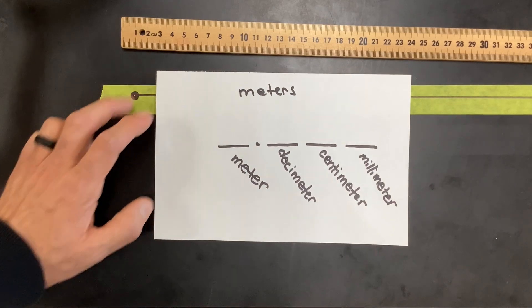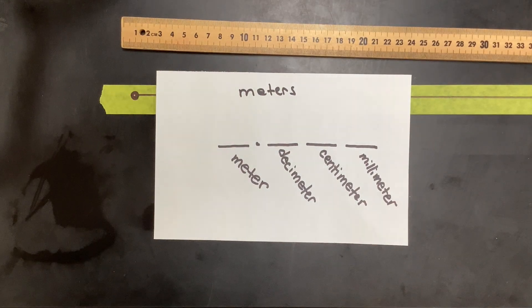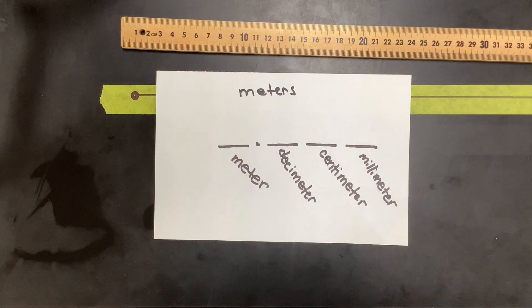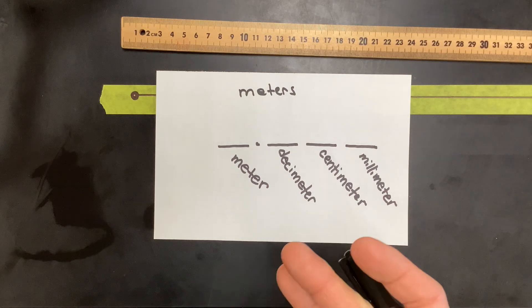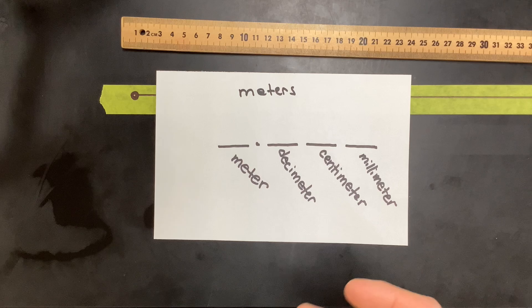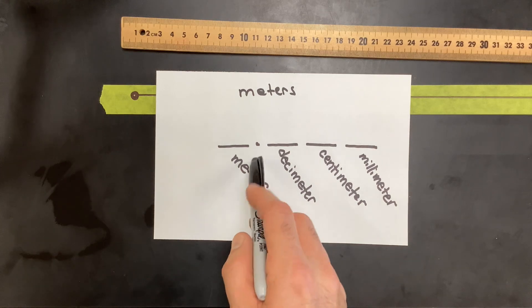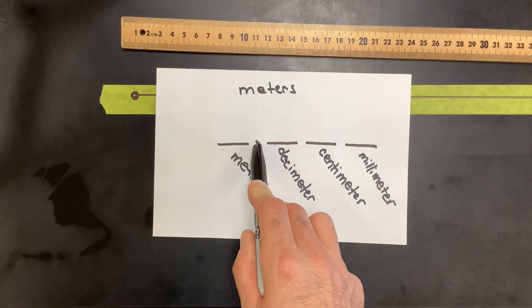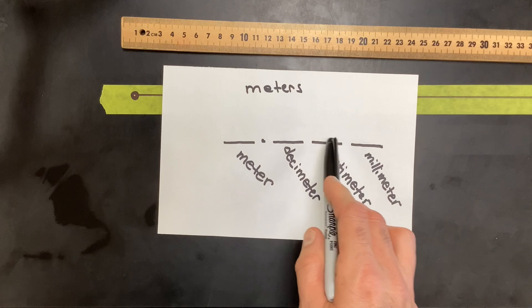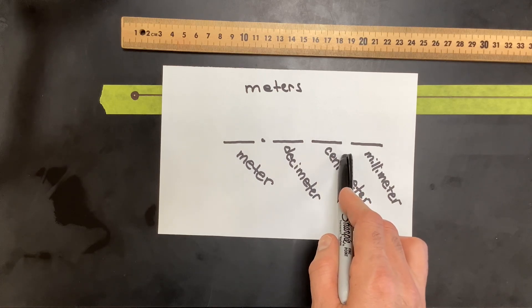So those are all your places you're going to be using when measuring in meters or centimeters. Really, the only difference between measuring in meters and centimeters is where you put the decimal. If you're measuring in meters, the decimal will go right after the meters. If you're measuring in centimeters, it goes right after the centimeter.